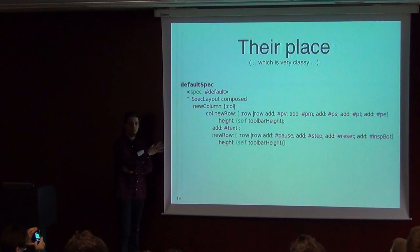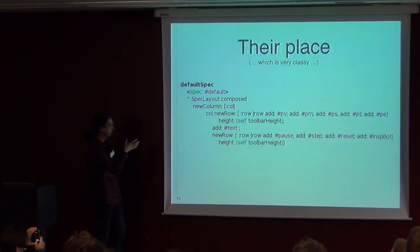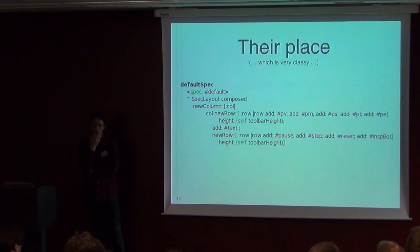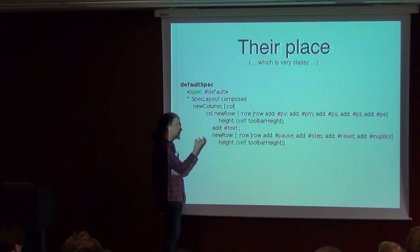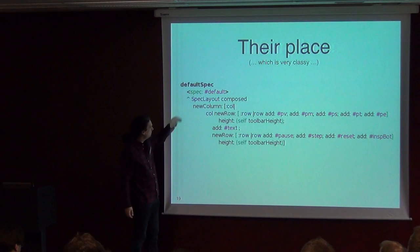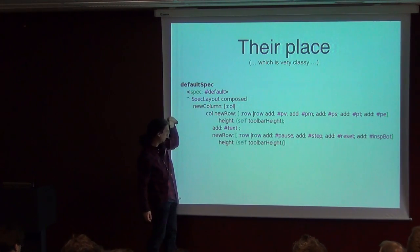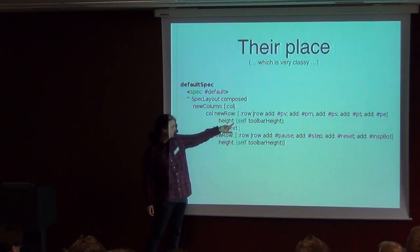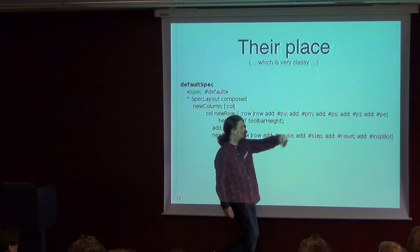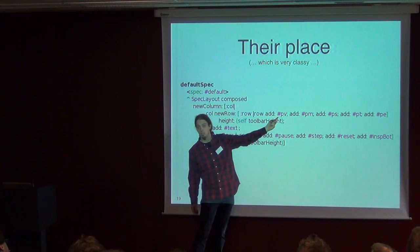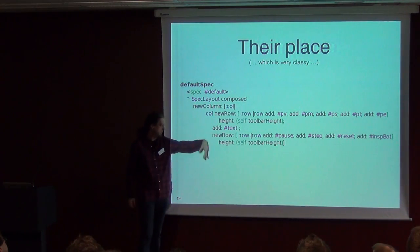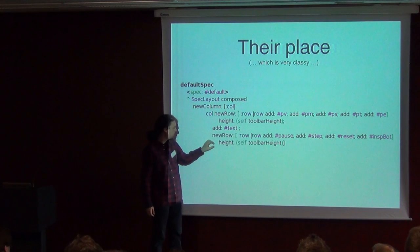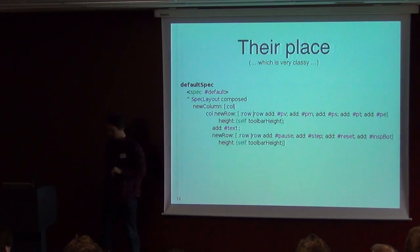I'm just going to focus on this example. What you can do is work with columns, and inside of the columns you can add rows. This works for a lot of things. I make the layout: the layout is one column. It's got one row at the top, a piece of text in the middle, and one row at the bottom. The row on the top is going to have a standard height — the height of the toolbar — and then I add all of these buttons using symbols, not the buttons themselves, because this is actually interpreted. When you make a row you can set the height; for a column you can set the width.